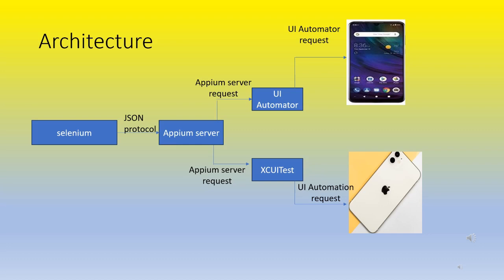Then there is a request for UI automation — it is called iOS Bootstrap.js. It is called iOS Mobile, iOS Phone — real device, emulator, and simulator.